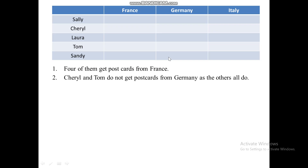The second clue says: Cheryl and Tom do not get postcards from Germany as the others all do. So Cheryl and Tom did not receive a postcard from Germany. How are you going to mark that in the table? We're going to mark them with an X. And since the statement says the others all do receive from Germany, we will mark Sally, Laura, and Sandy with a check for Germany.